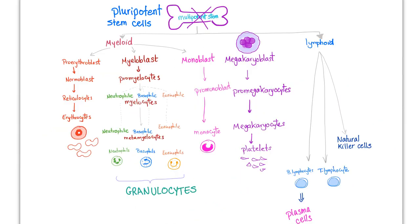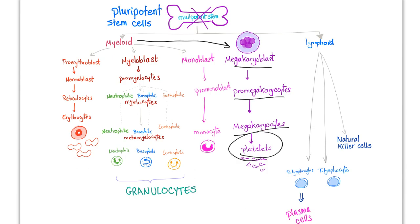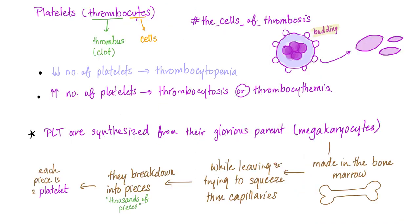We have talked about hematopoiesis before — we have the myeloid and the lymphoid lineages. The megakaryocytes are myeloid. So: megakaryoblasts, promegakaryocytes, megakaryocytes, and platelets. Who helps promote all of these steps? The great T-Po.